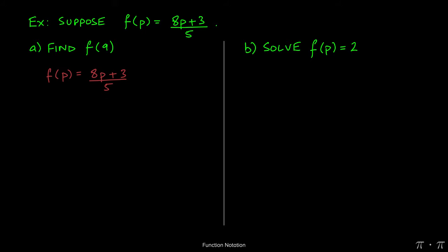When we're given the task to find f of 9, we're being told implicitly that p, or the independent variable, assumes the value of 9 and we're being asked to find what the output variable, or the dependent variable f, is going to be when p is 9.